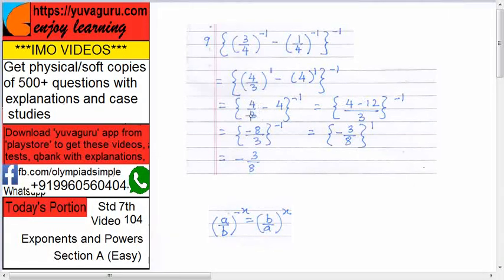LCM is 3, so 4 minus 12, 4 times 3 is 12, upon 3, the whole raised to minus 1. So that is minus 8 upon 3 raised to minus 1.